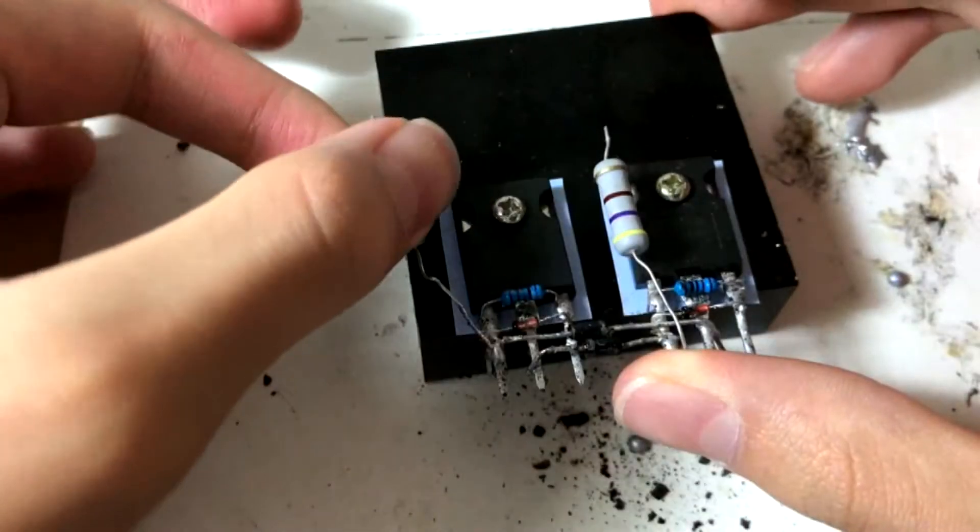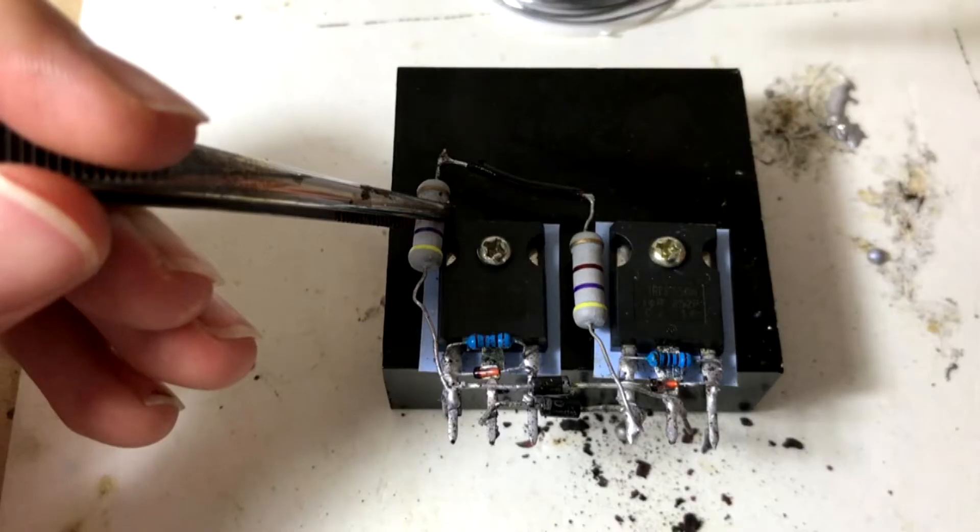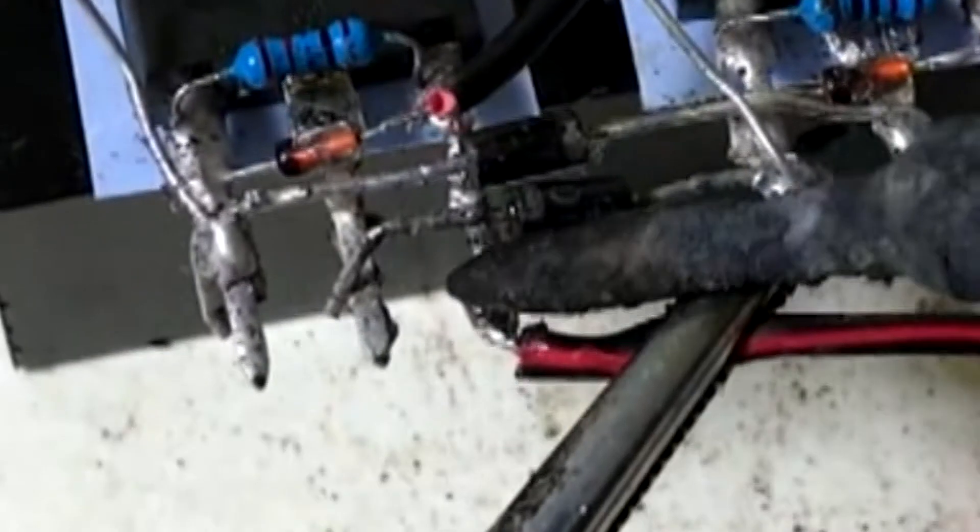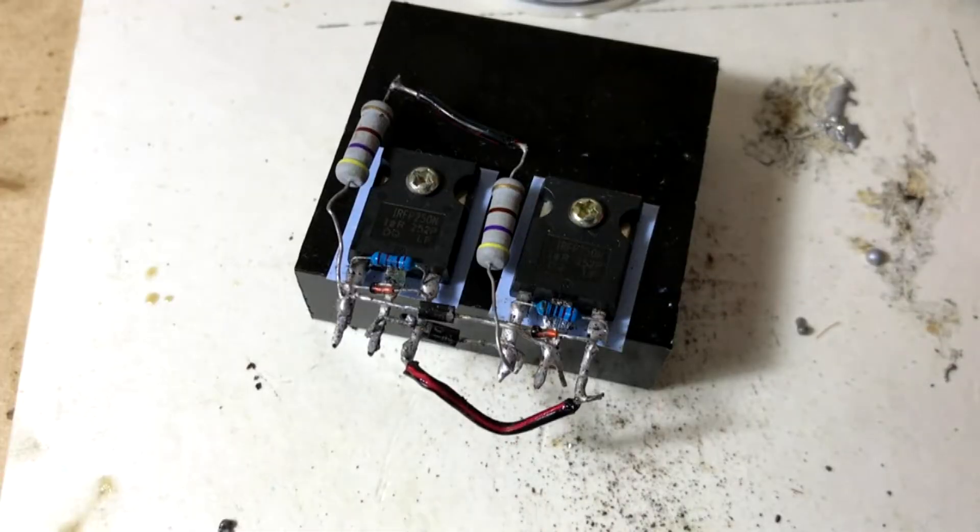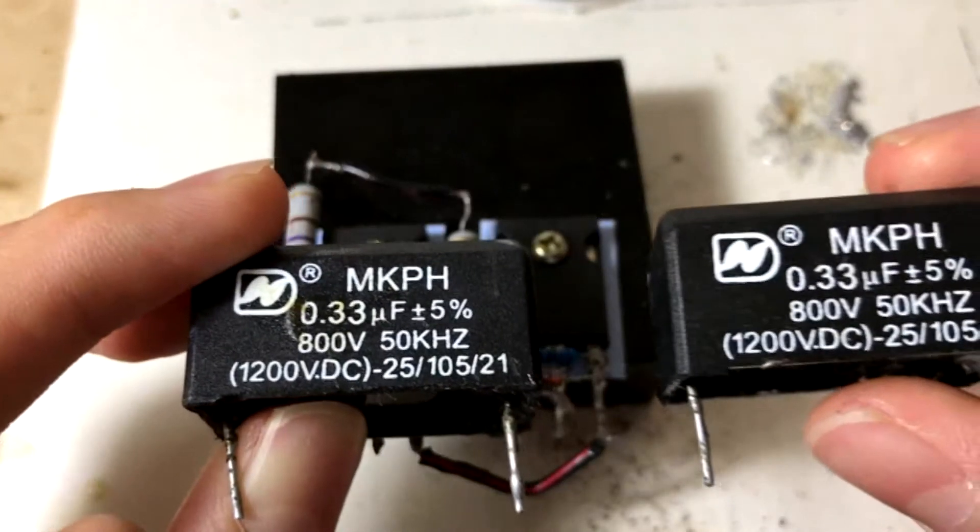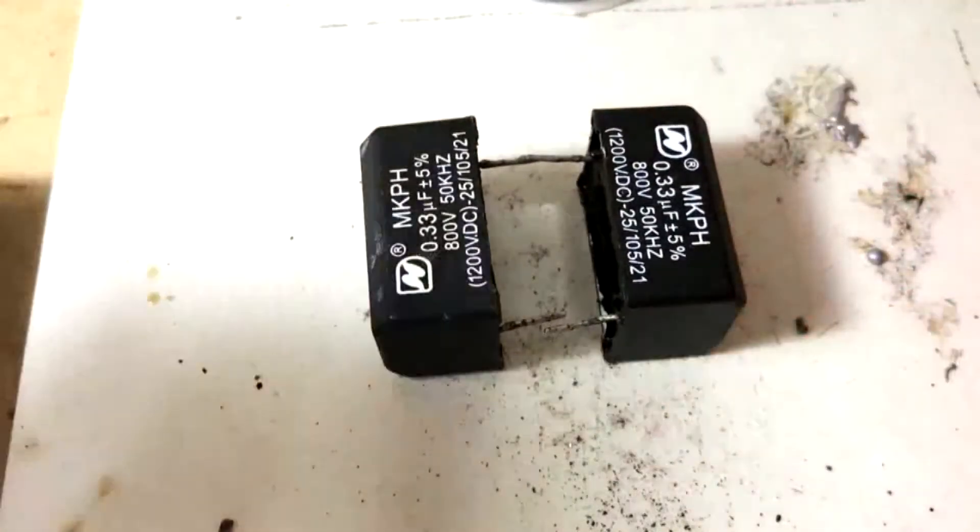Press them beside the MOSFETs. We need to solder a small piece of wire to connect these two resistors, and we want to short the S pins of the MOSFETs, so solder another wire on them. Now we need two capacitors called MKPH capacitors. It's a high frequency capacitor. We need to connect them in parallel.